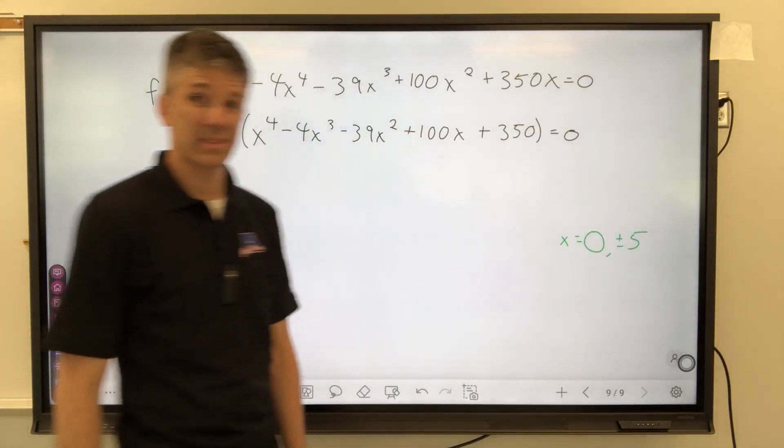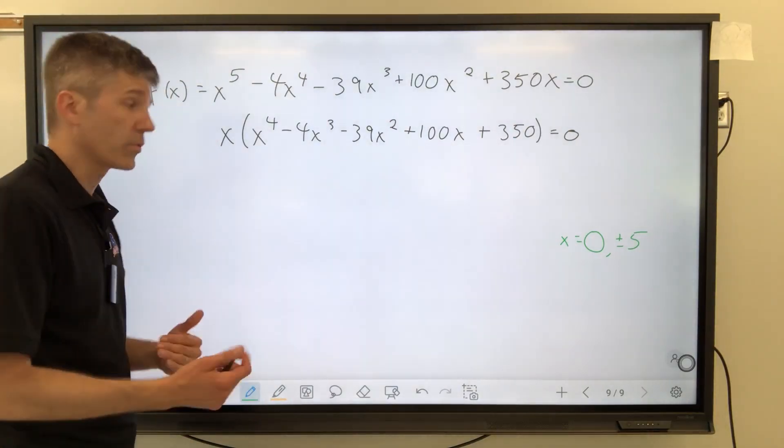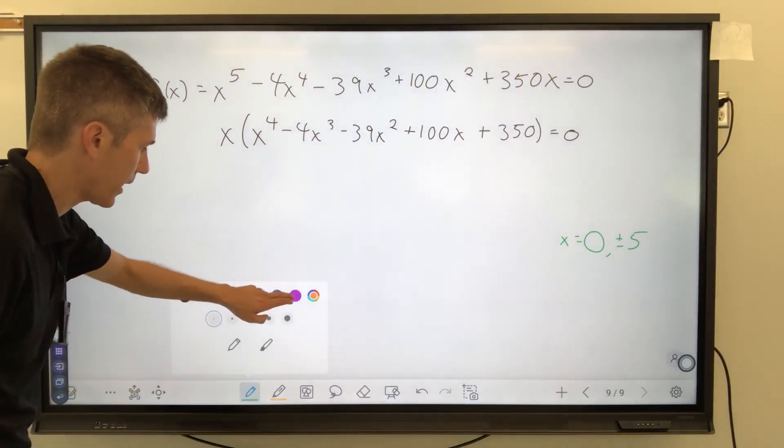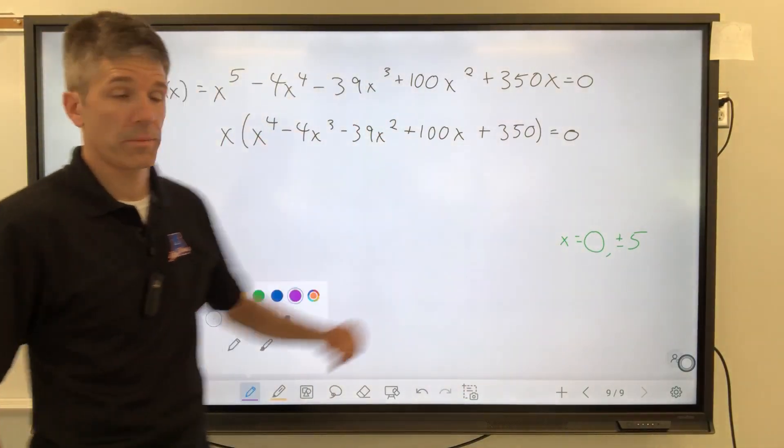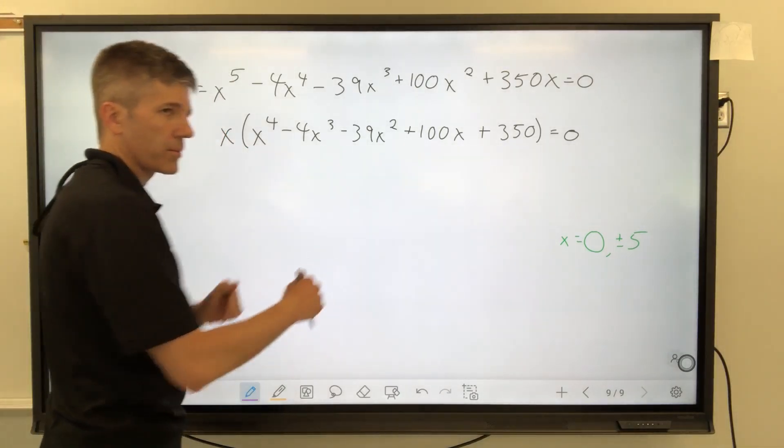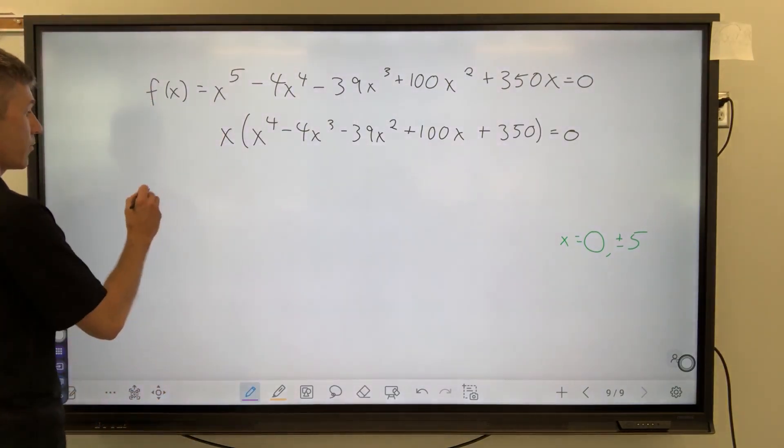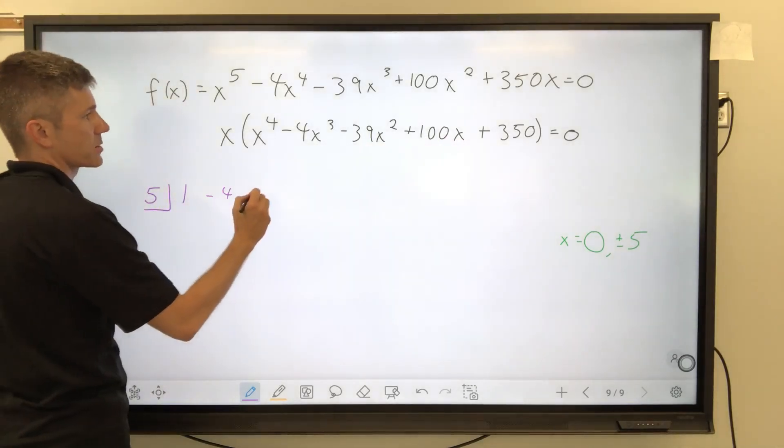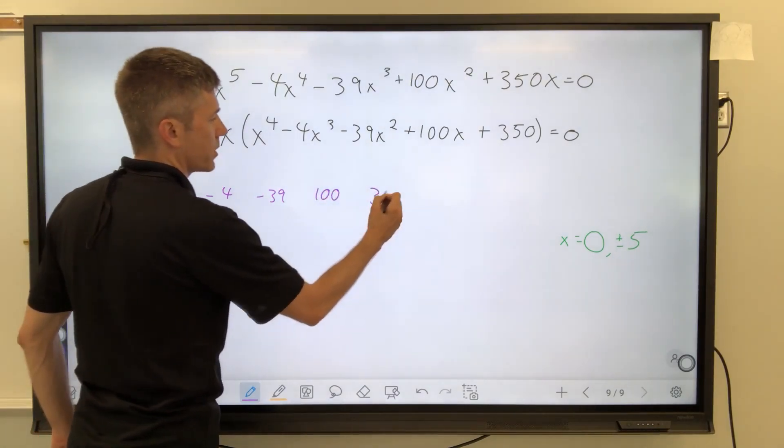So here's our next best guess to find the last two, which we're seeing on the graph, but we don't know them in simplest radical form. So our next best guess is to divide out, using purple of course, the 5 and the negative 5 from the polynomial that remains. I don't need the x anymore. This is not a situation where I'm continuing to factor. But what I am going to do is divide 5 into 1x to the 4th, negative 4x cubed, negative 39x squared, 100x and 350.